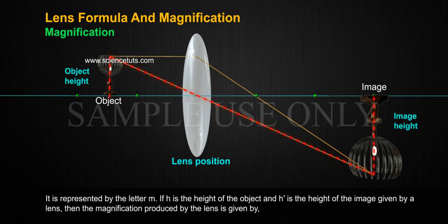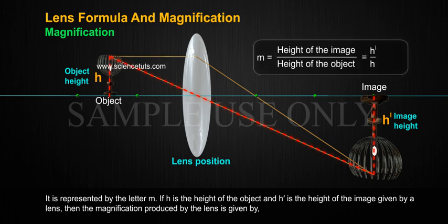It is represented by the letter M. If H is the height of the object and H' is the height of the image given by a lens, then the magnification produced by the lens is given by M equals to height of the image by height of the object equals to H' by H. Equation 9.